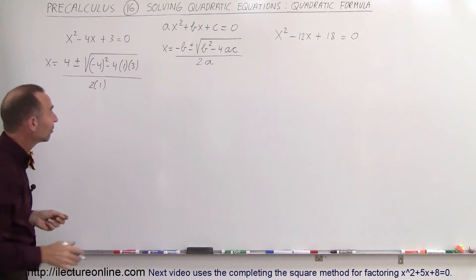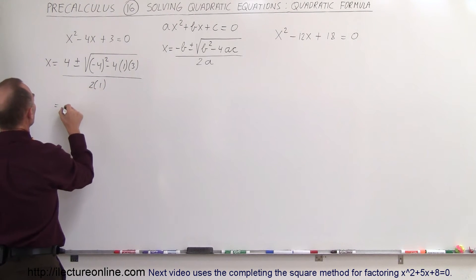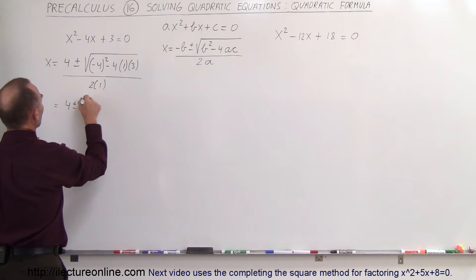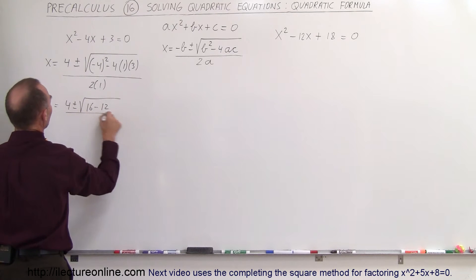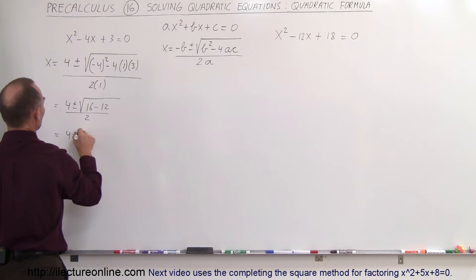All right, let's simplify that and see what that is equal to. This is equal to 4 plus or minus the square root of 16 minus 12, all divided by 2,